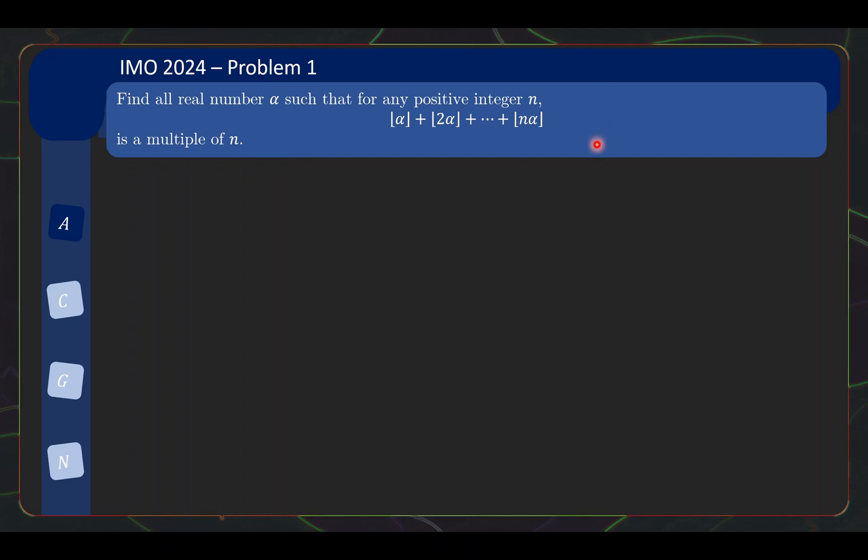So quite a short and sweet problem over here with a really interesting looking expression involving the floor function. Now when faced with a problem like this, usually you'll want to try to make your life simpler by trying some simple cases in order to get a better view of the problem. So naturally in this case, the floor functions are a bit annoying. So it's quite intuitive to start off by trying the case where alpha is an integer.